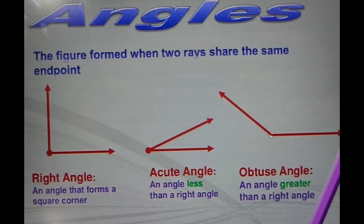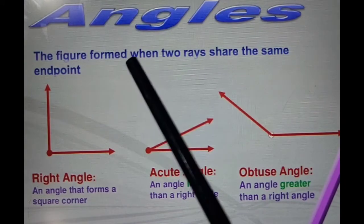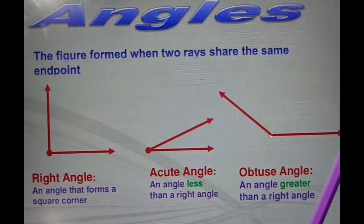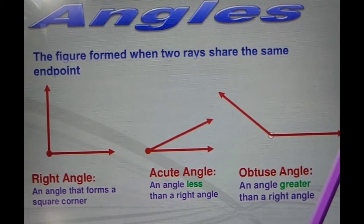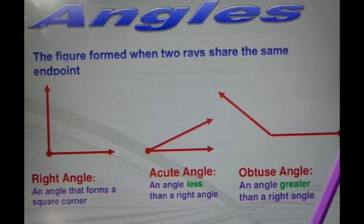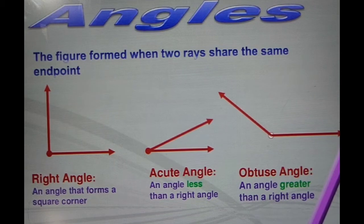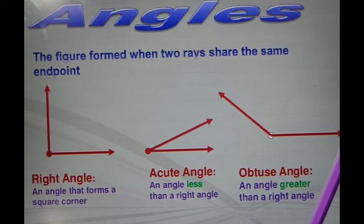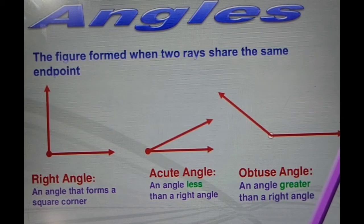Next are the basic angles — three basic angles. The figure formed by two rays sharing an endpoint. First, right angle: an angle that forms a square corner, which is a 90 degree angle, and that is named as right angle. Next is the acute angle — an angle less than 90 degrees is called an acute angle. Next, obtuse angle — an angle greater than 90 degrees is called an obtuse angle.